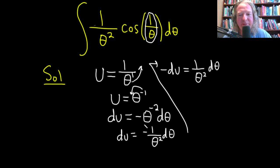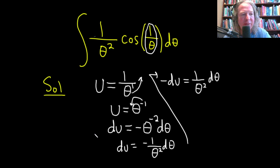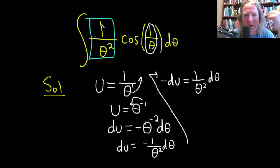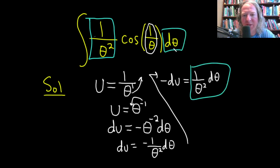Perfect. So now we have exactly what we want, right? Let me just show you here, I mean highlight it. So 1 over theta squared d theta. That's this right here. So the blue boxes match.